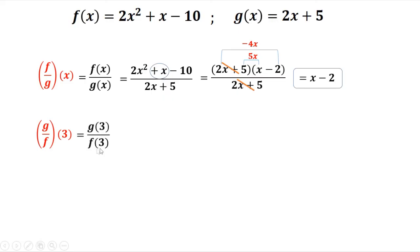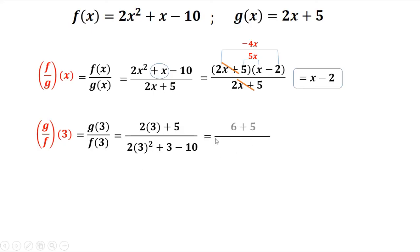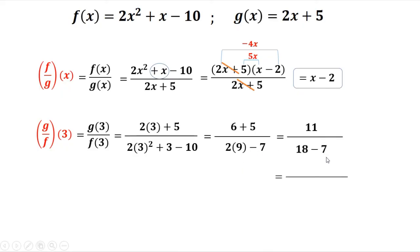Another example: g(3) over f(3). The numerator g(3) is 2 times 3 plus 5, and the denominator f(3) is 2 times 3 squared plus 3 minus 10. Simplifying: 6 plus 5 is 11, and 2 times 9 is 18, plus 3 minus 10 equals 11. So the answer is 11 over 11, which equals 1.